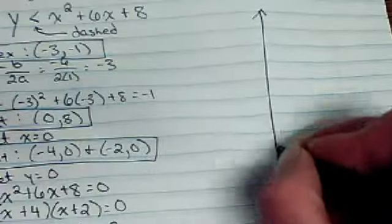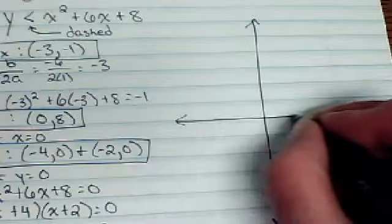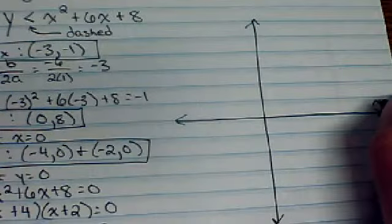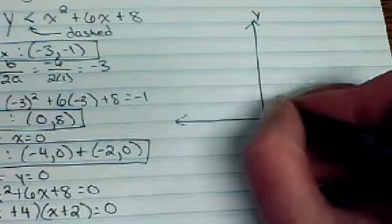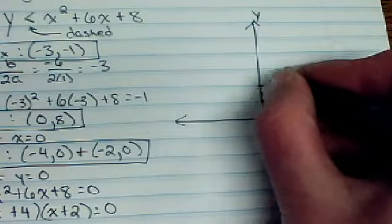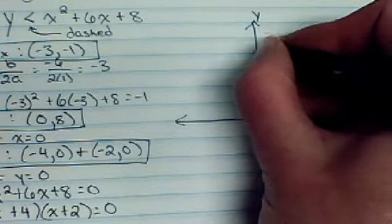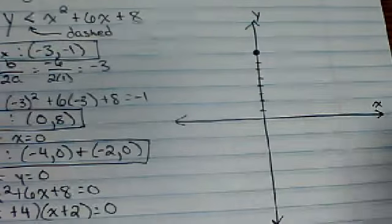So let's go ahead and sketch that boundary line. My y-axis and my x-axis. I'm going to go ahead and plot that y-intercept: 1, 2, 3, 4, 5, 6, 7, 8.